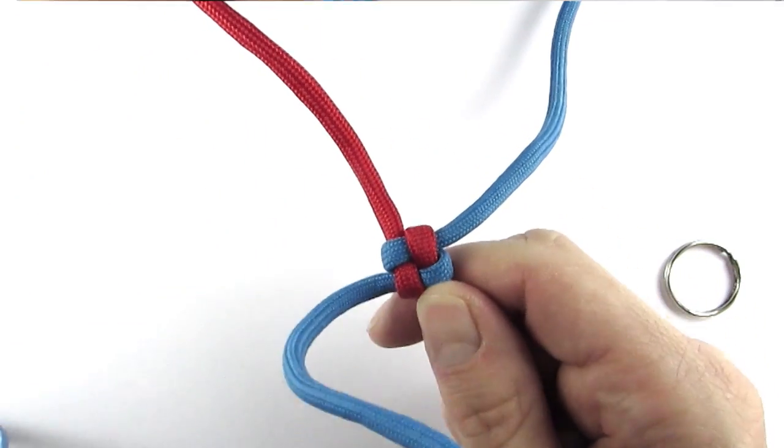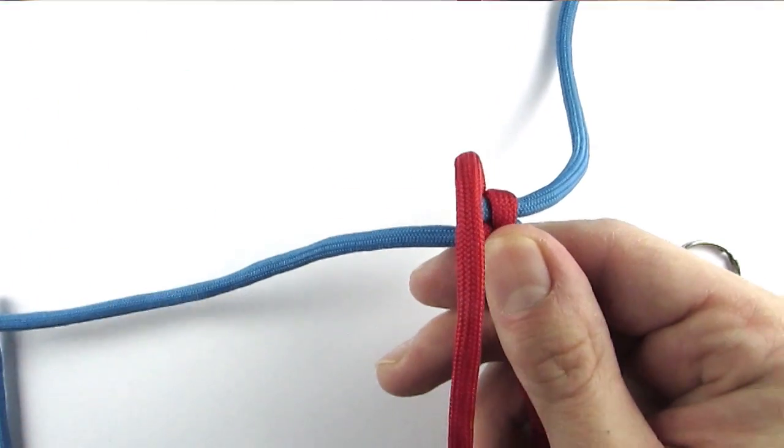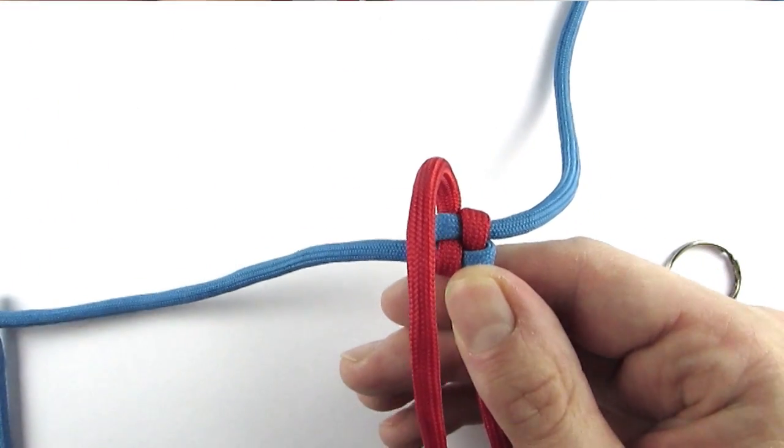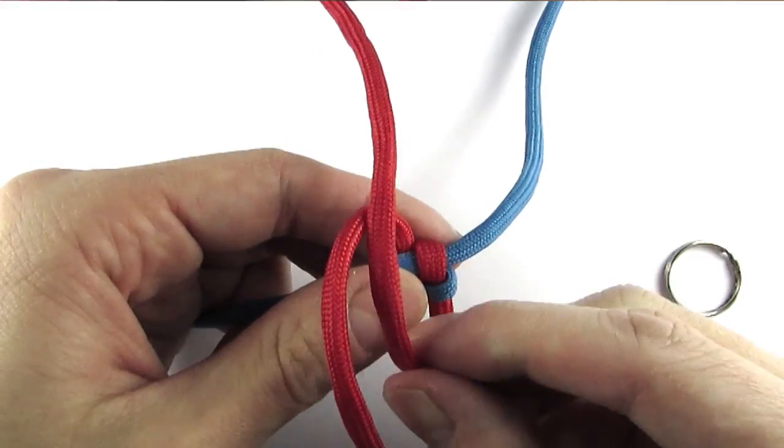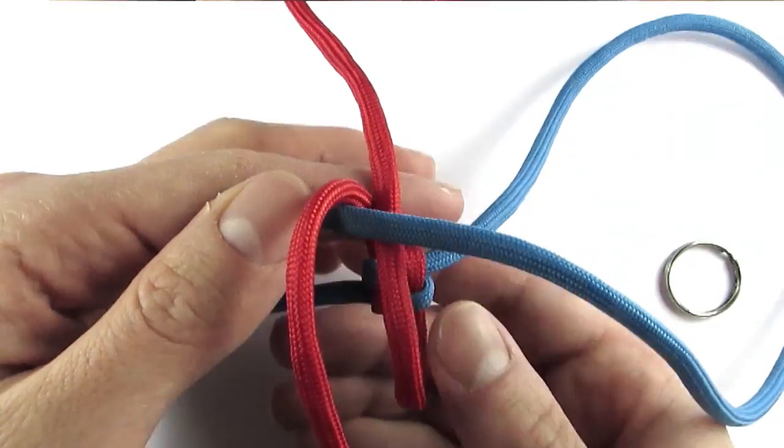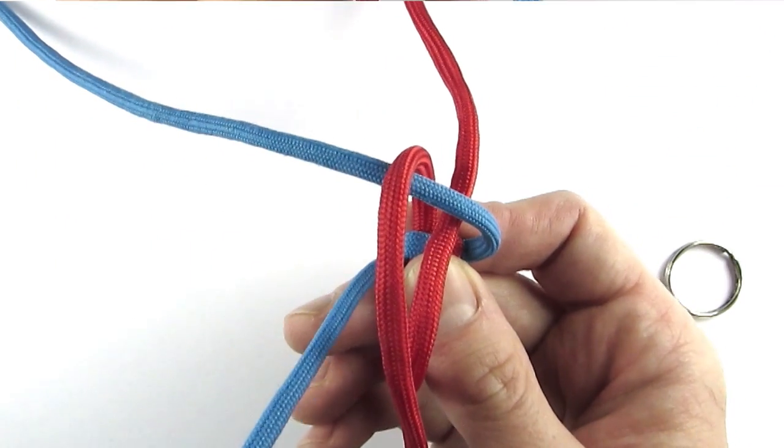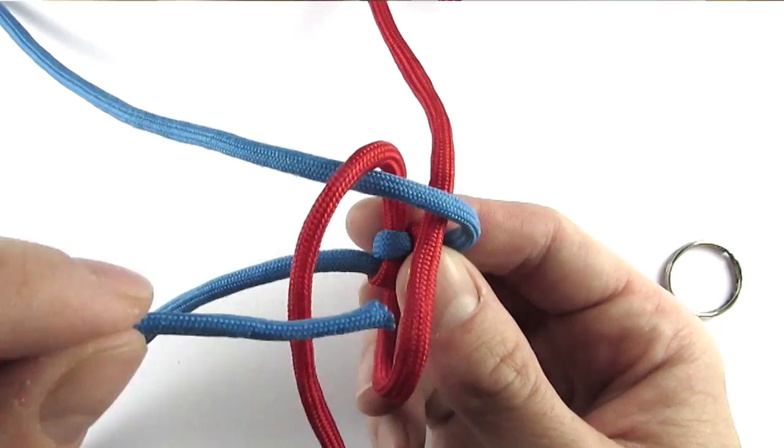We can then continue the second one by again folding the cords over it and then weaving the side cords over under. With one cord end and then with the other cord end we go again over and then under like this.